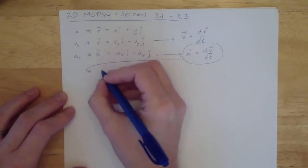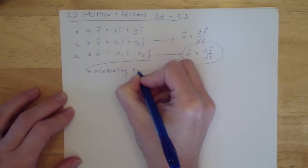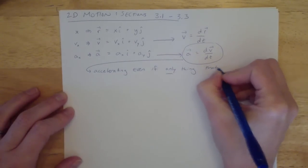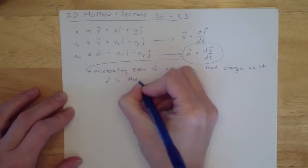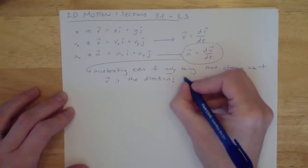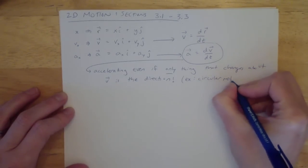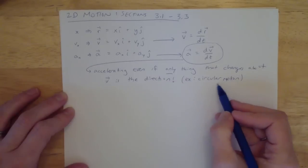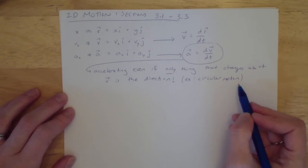So let's make a note of that point: something is accelerating even if the only thing that changes about the velocity is the direction. For example, when we get to section 3.4, we'll talk about circular motion. From this simple definition of acceleration in two dimensions, you can see that something moving in a circle at a constant speed would certainly have a non-zero acceleration.